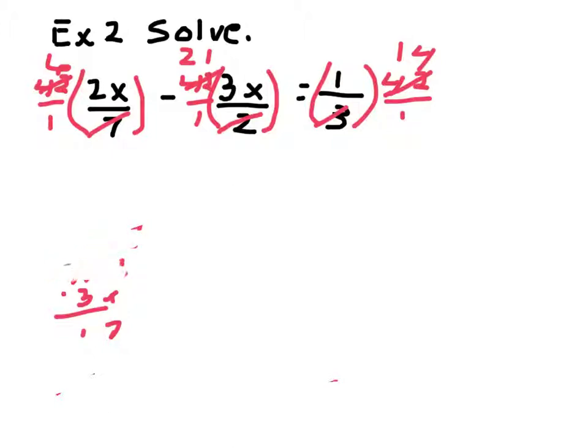I'll erase this and then we'll finish this out. And what I have left then, after I cross-cancel, then is 6 times 2x is 12x minus, let's see, 21 times 3x would be 63x equals 14. Alright, now, simplify, do any simplifying,